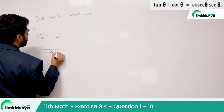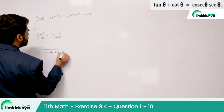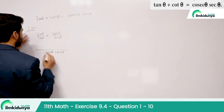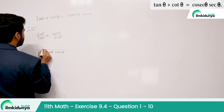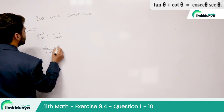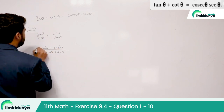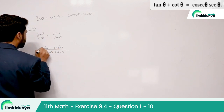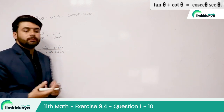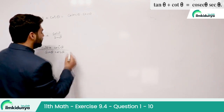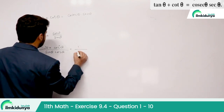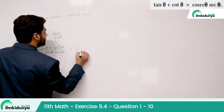We take the LCM of sin θ and cos θ. In the numerator we get sin² θ + cos² θ. Now we know that the identity sin² θ + cos² θ equals 1, so the numerator becomes 1 over sin θ · cos θ.